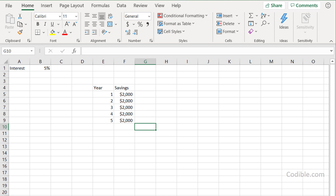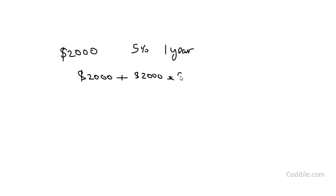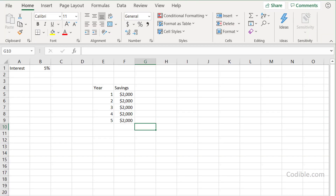Let's take a small detour and try to understand how this interest works. You have two thousand dollars and you're earning interest at the rate of five percent for one year. At the end of that year, you have your two thousand plus interest on the two thousand, which is two thousand times five percent. That can be written as two thousand times one plus your interest rate.